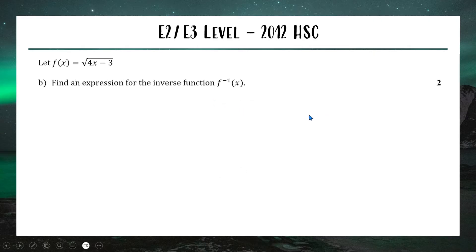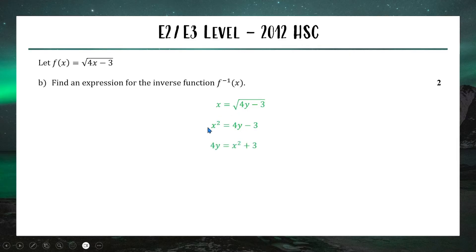Part b — find an expression for the inverse function. We swap the variables: x becomes the output and y becomes the input. Then we rearrange to make y the subject. Squaring both sides gives x² = 4y − 3; adding 3 across and swapping sides gives 4y = x² + 3; dividing by 4 gives y = (x² + 3)/4. That right there is our inverse function, which you can also write using the f⁻¹ notation.